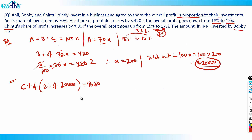To clarify: the overall profit increase is 2% of ₹20,000. Within that, Chintu's share is c percent — unlike Anil's known 70%, we need to find c. So the equation is: c% of (2% of ₹20,000) = ₹80, which gives us (c/100) × 400 = 80.